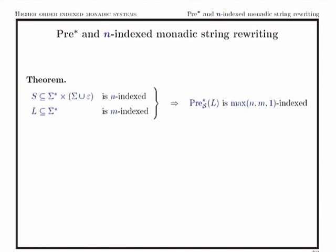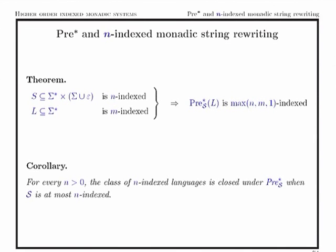This leads to the following result: analogously to before but now with the Kleene star, we have the maximum of n and m, and we stay at the maximum. Simply put: if we have an n-indexed language and apply inverse image by a system which is at most n-indexed, we stay at the same level. Every level of the n-indexed language hierarchy is closed under rewriting by n-indexed systems.